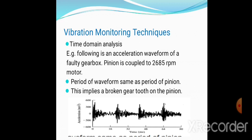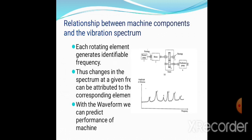Look at this. A gearbox pinion is coupled to a 2685 RPM motor. The period of the pinion is plotted with acceleration versus time. We see fluctuations showing amplitude variations during vibrations, which implies broken gear on the pinion.